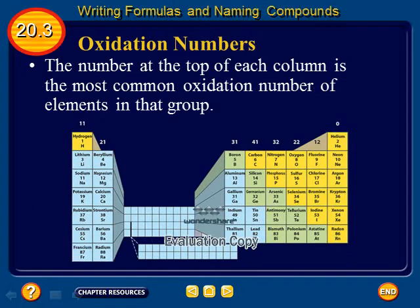The number at the top of each column is the most common oxidation number of elements in that group. For example, in the first group, beginning with hydrogen, the oxidation number for that group is 1+. For the second group, 2+, and so forth.